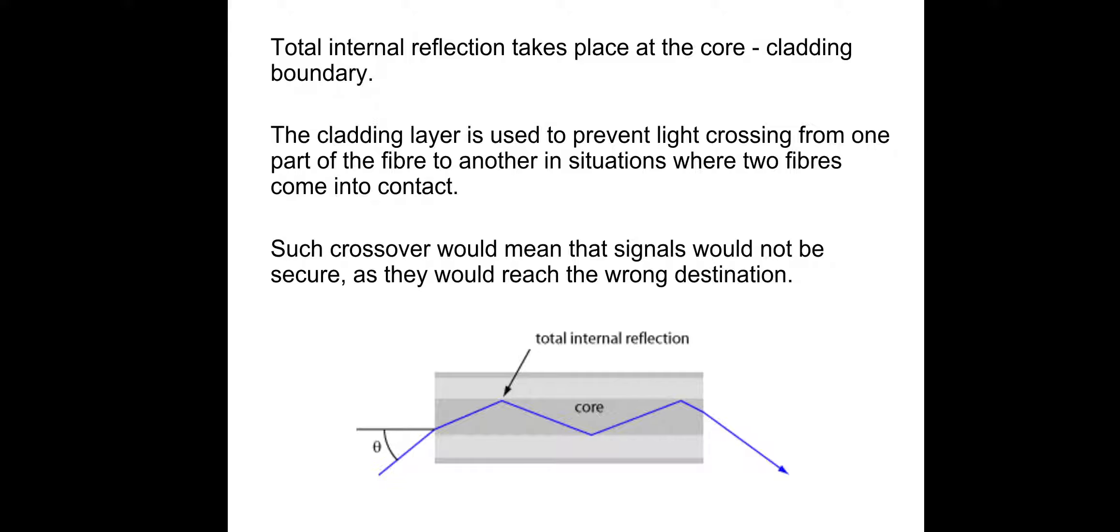Next bit, total internal reflection takes place at the core-cladding boundary. The cladding layer is used to prevent light crossing from one part of the fiber to another in situations where two fibers come into contact. Such crossover would mean that signals would not be secure as they would reach the wrong destination. Now, total internal reflection occurs when the angle of incidence is greater than the critical angle. It has to be greater.